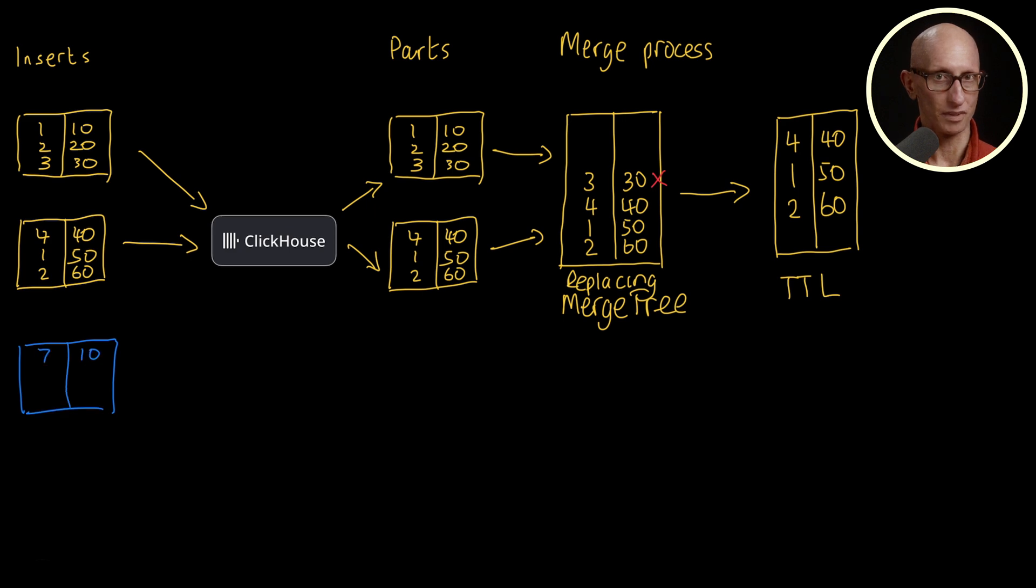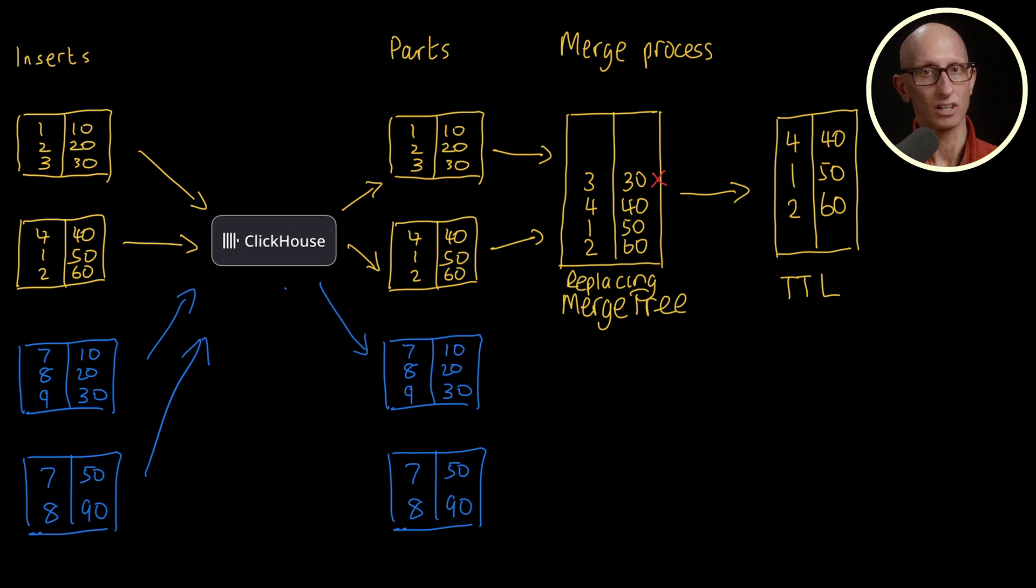Let's imagine we have another table and it has some inserts coming in. Again, parts are created for each batch. This time we're using the aggregating MergeTree engine. And this engine, as the name suggests, aggregates the values for matching keys.